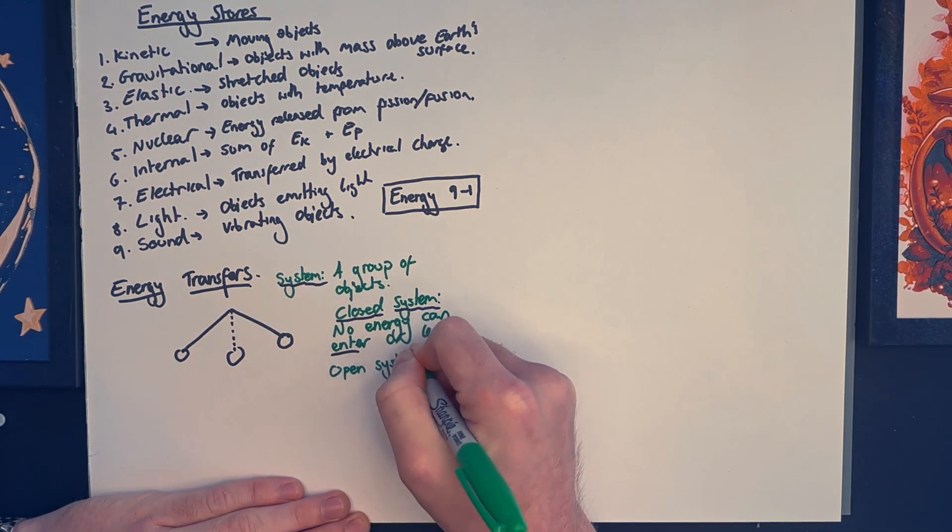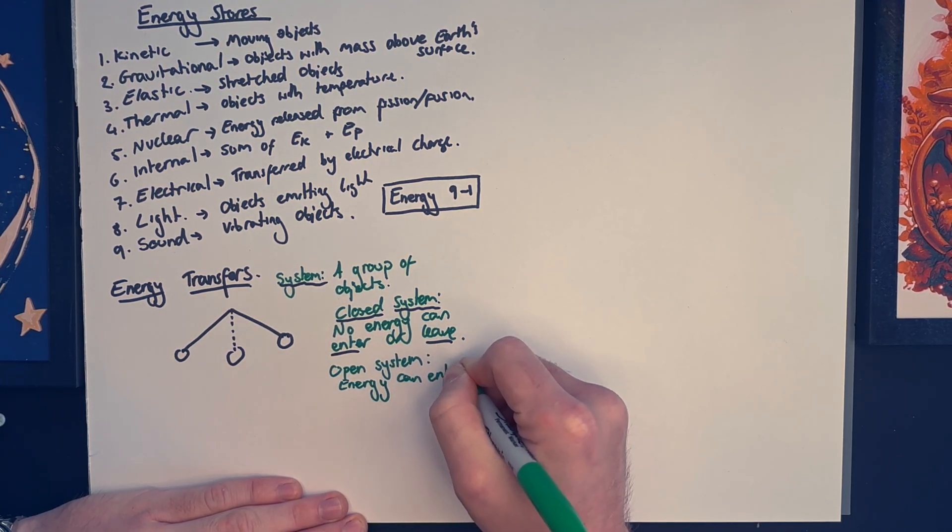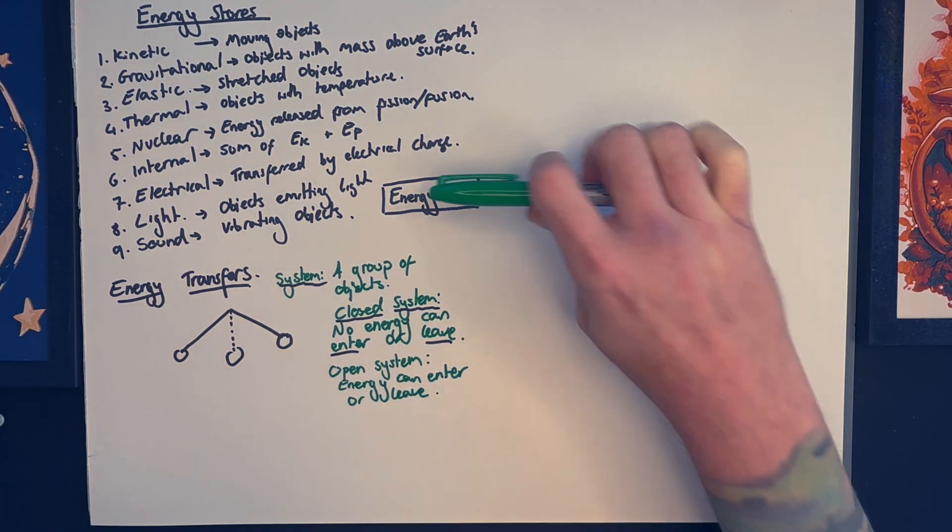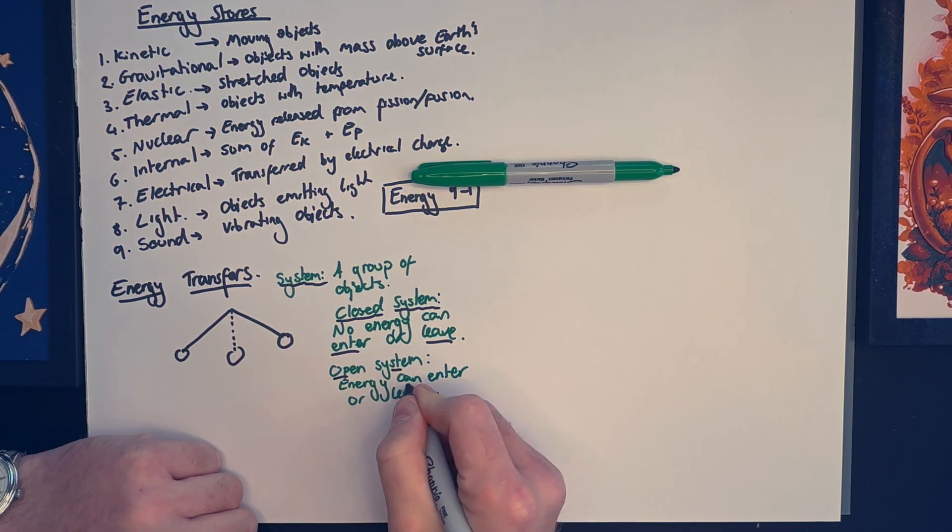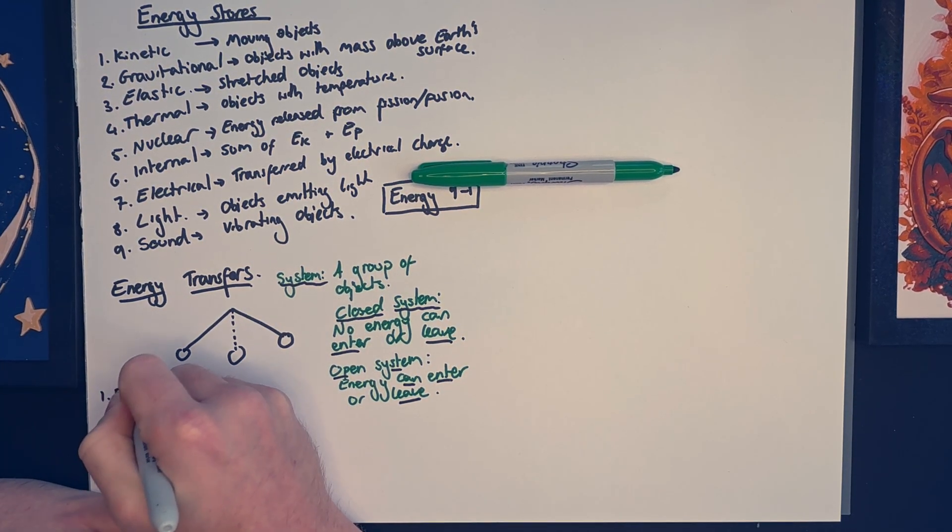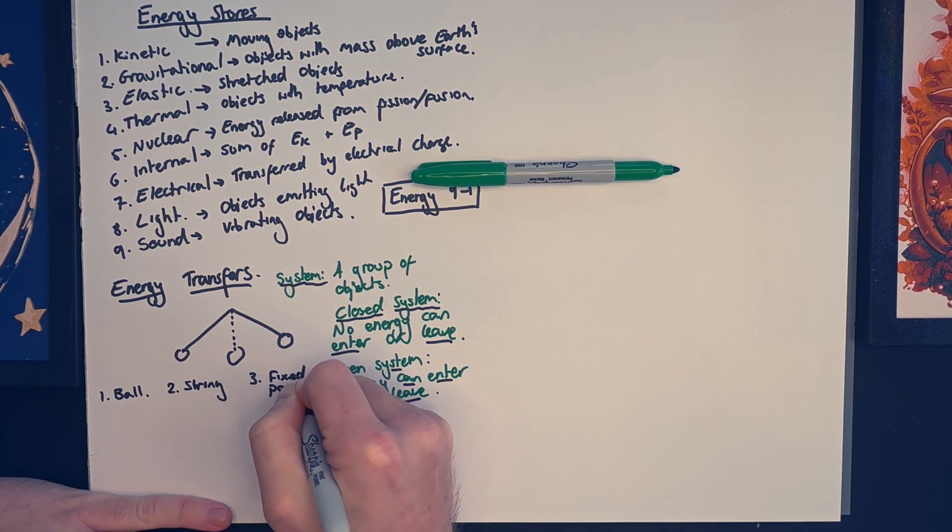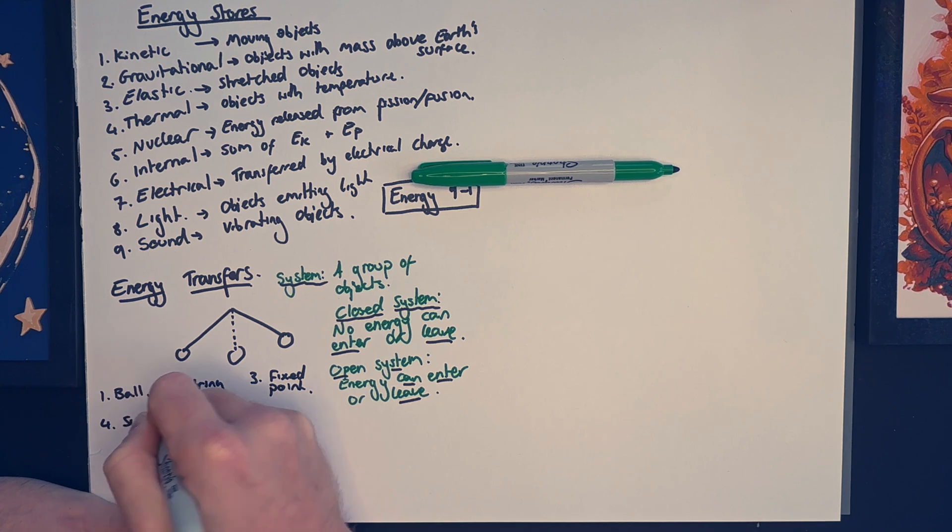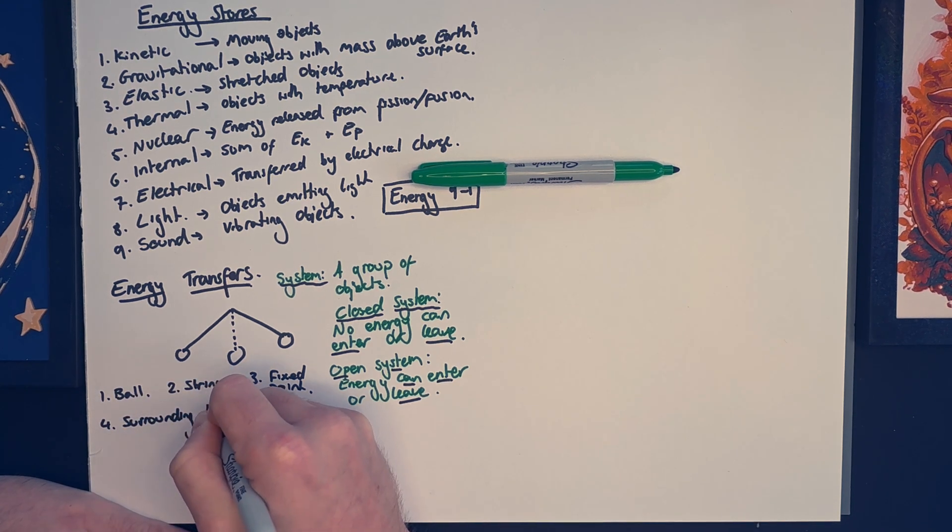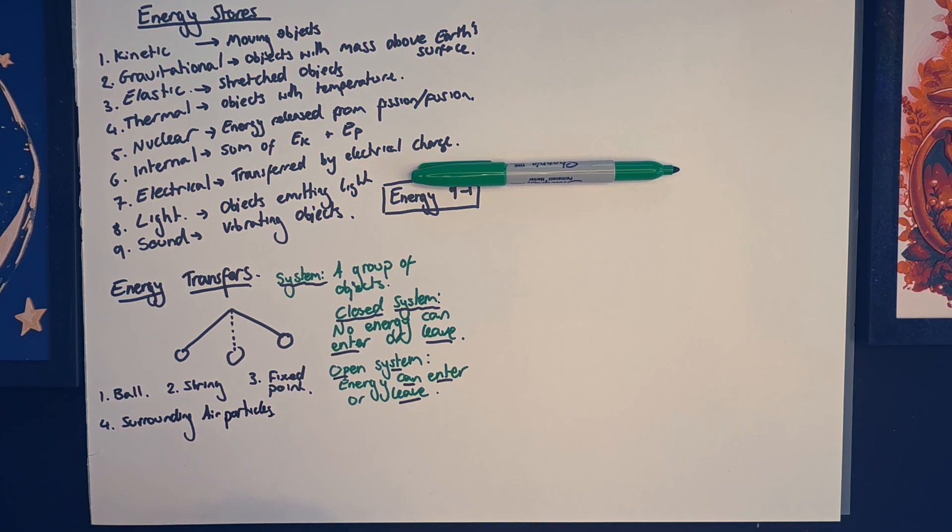Now in this system we're looking at a pendulum. That's just any kind of swinging objects. So if I pick up my nephew and swing him back and forth, that would make a pendulum. In the pendulum I've drawn on screen here there are a few objects to be aware of. So that includes the ball, the string, the fixed point, the point it's attached to, and the surrounding air particles.